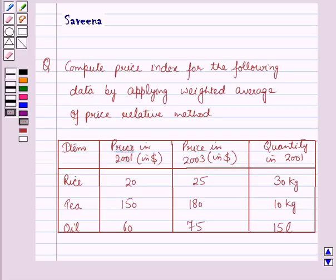The data is given in a table where the first column lists items: rice, tea, and oil. The base year prices in 2001 in dollars are 20, 150, and 60. The current year prices in 2003 are 25, 180, and 75. The quantities in the base year 2001 are: rice 30 kg, tea 10 kg, and oil 15 liters.